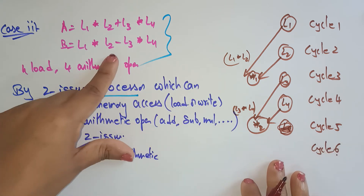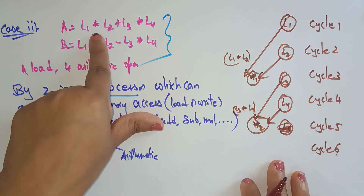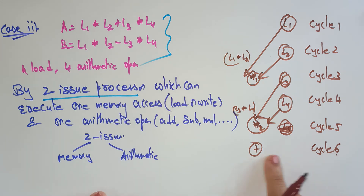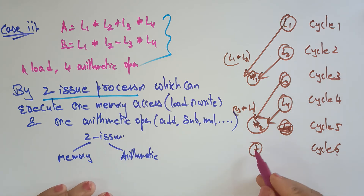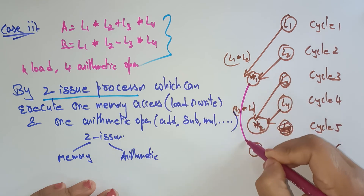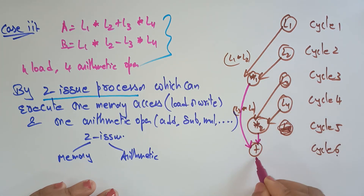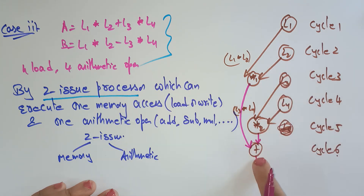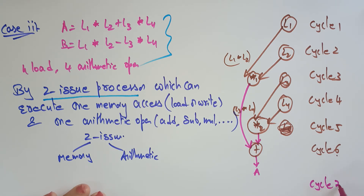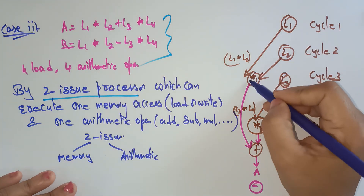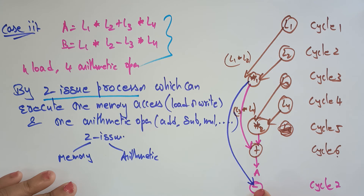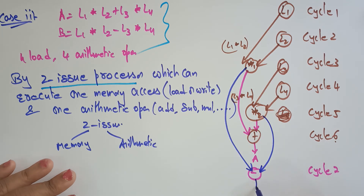Now in cycle 6, I have to do addition. I can perform only 1 arithmetic operation and 1 memory access, but there is no need for memory access here. So L1×L2 + L3×L4 gives the A instruction. Then in cycle 7, the subtraction operation: L1×L2 − L3×L4 gives B.